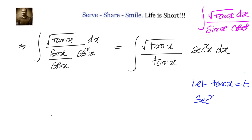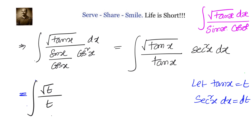With sec squared x dx becoming dt, we change from x to t. The integral becomes square root of t divided by t into dt. Square root of t divided by t is 1 by t to the power of 1 by 2, which we can write as t to the power of minus 1 by 2.